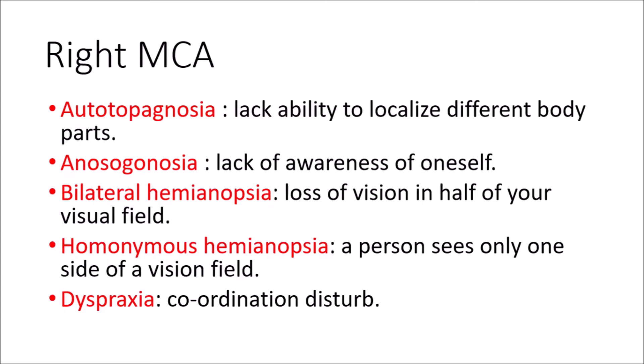Next is homonymous hemianopsia. In a healthy individual, the left side of the brain processes visual information for the right side of both eyes, and the right side of the brain processes visual information for the left side of both eyes. So when the left side of the brain is affected, the right-side vision is lost, and when the right side is affected, the left vision of both eyes is lost — that is homonymous hemianopsia.